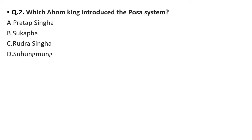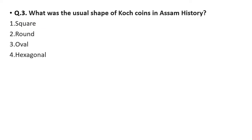Question 2: Which Ahom King introduced the Paik/Posa system? Option A: Pratap Singha, option B: Sukafa, option C: Rudra Singha, option D: Soong Moong. The answer is Pratap Singha, so option A is your correct answer.